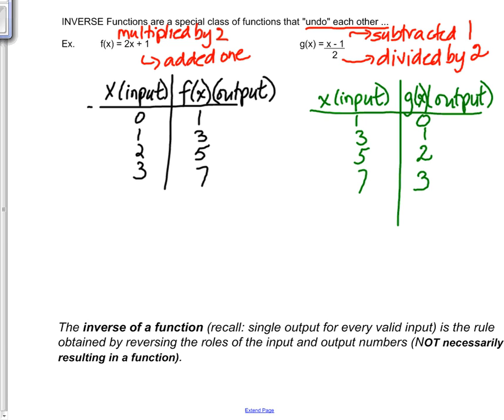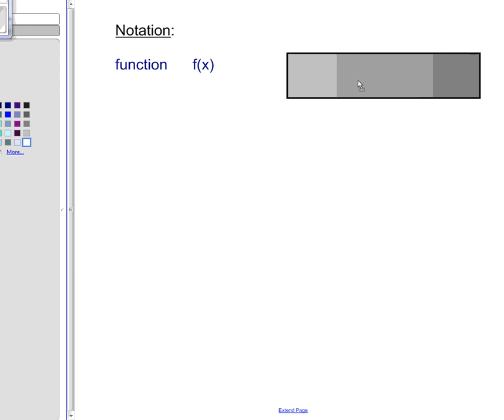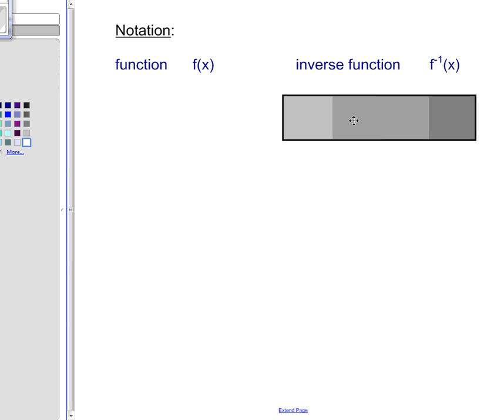This undoing is obtained by reversing the roles of the input and output number. For a function f of x, the notation we use is f with a little minus 1. Just like we have inverse sine to undo a sine function, f⁻¹(x) is the undo or the inverse of f of x.